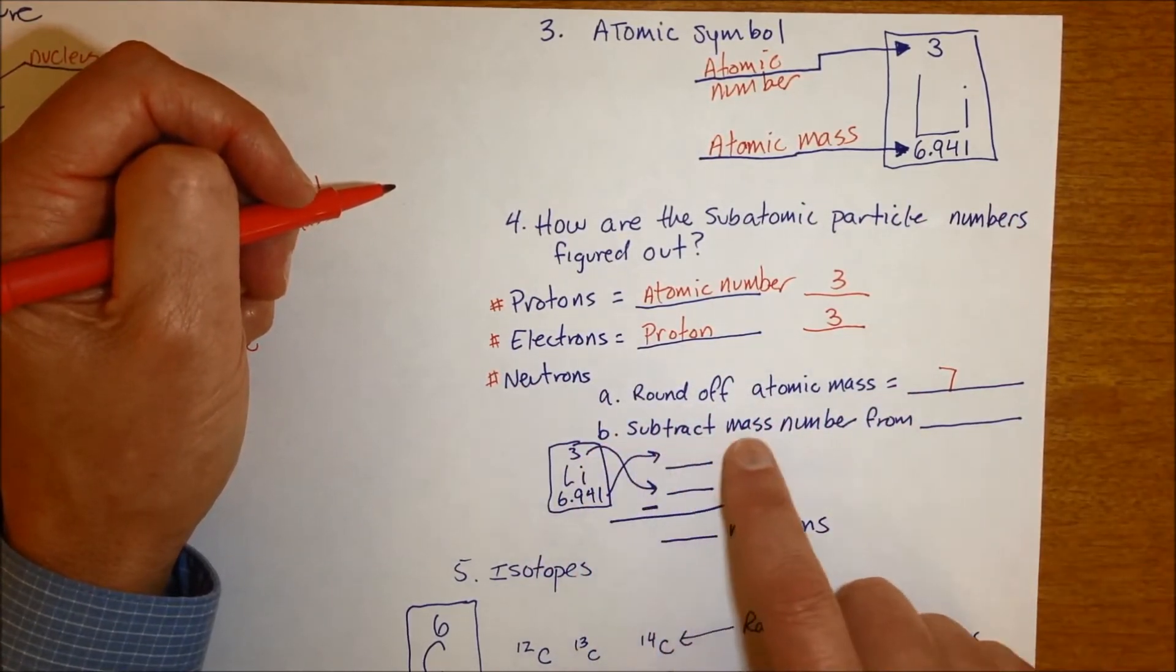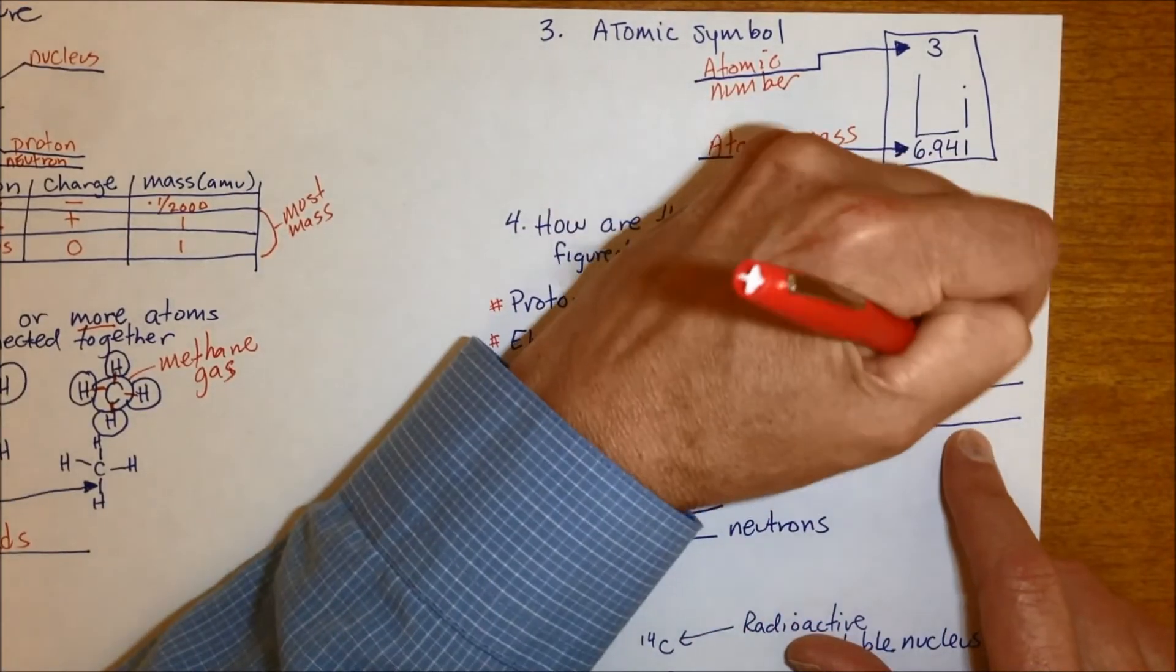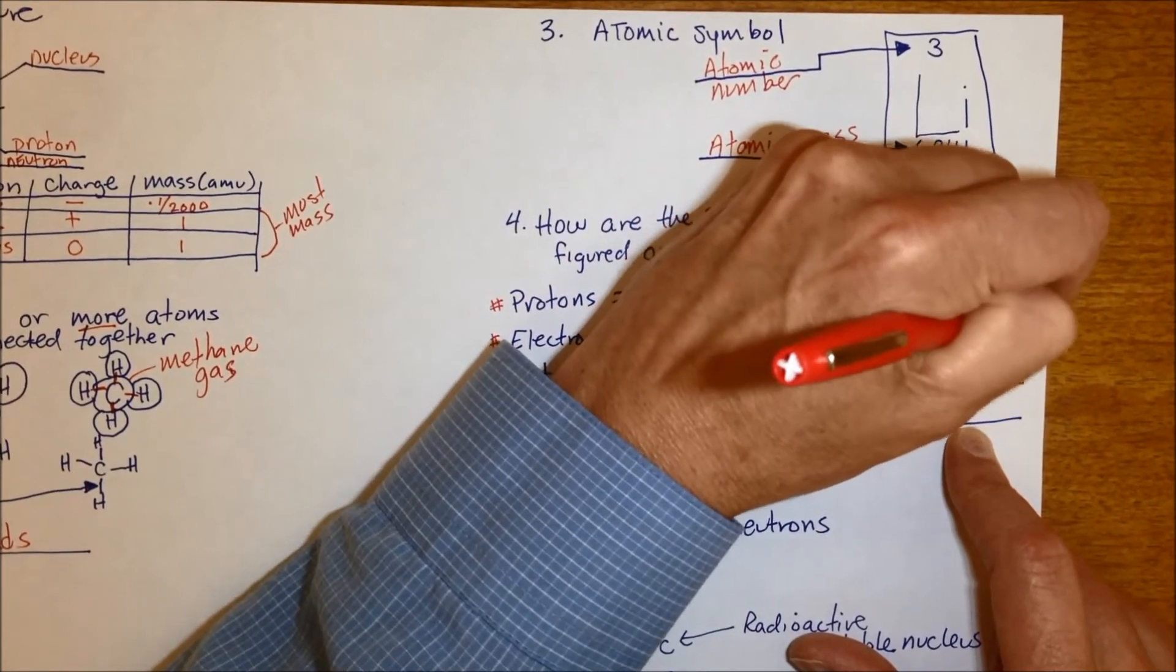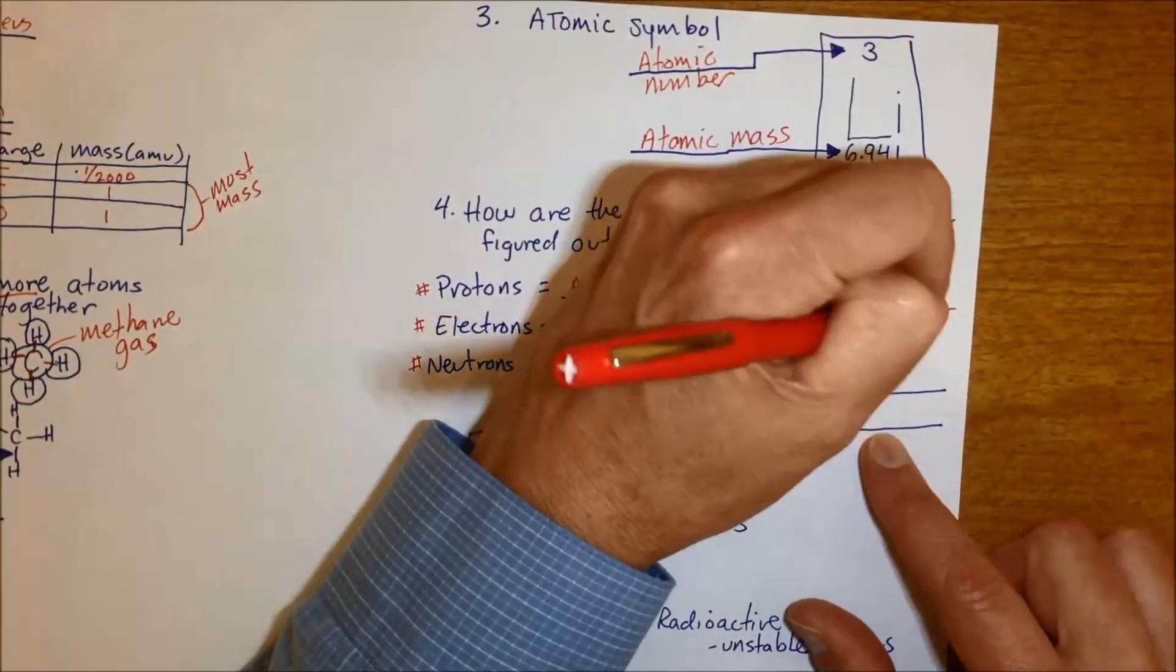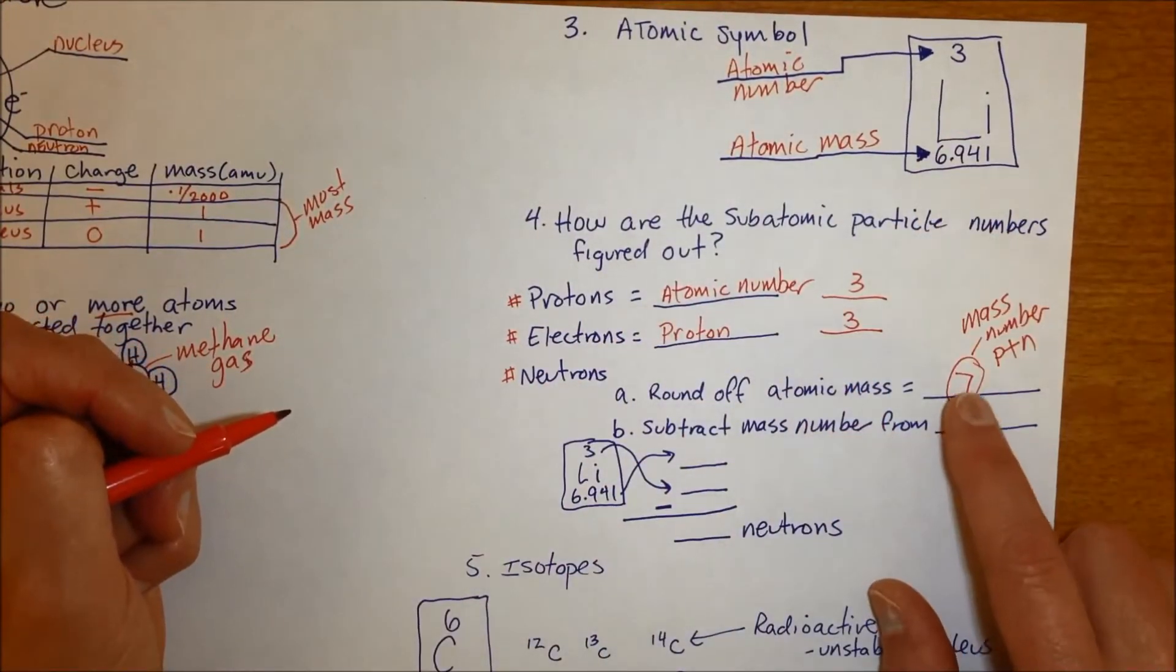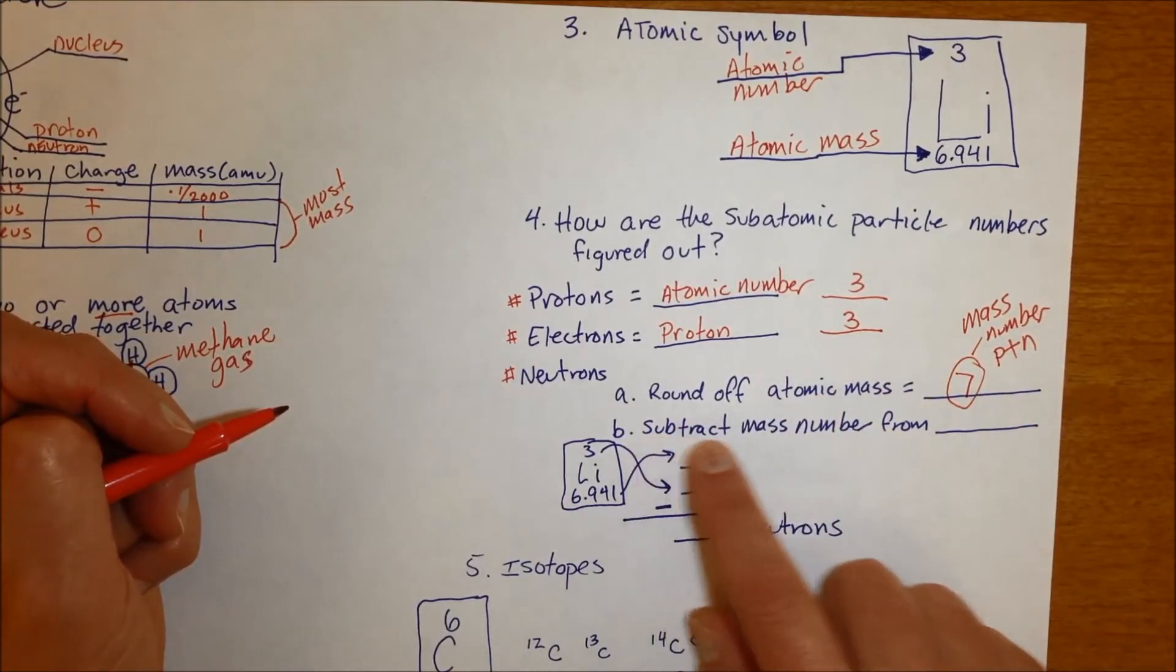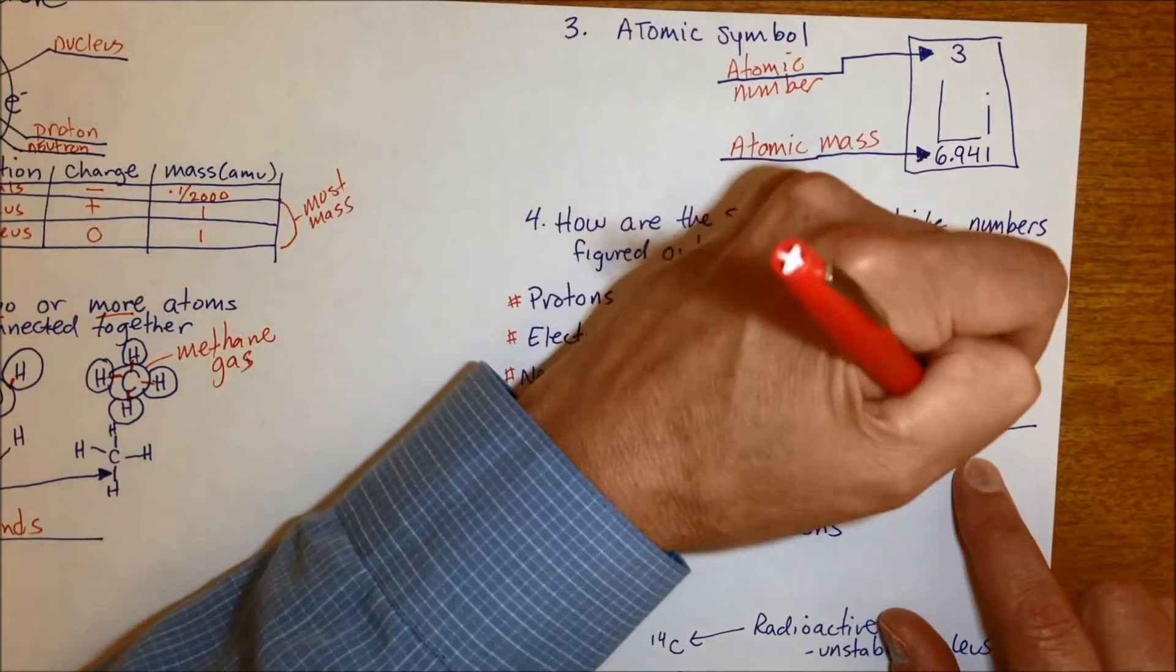The atomic mass is that decimal number in there, and you have to follow rounding rules. So if it's 0.5 or more, you round up. So in this case, that rounds to seven. That's not the number of neutrons, though. That's just rounding this off. That rounded off number actually has a name. It's called the mass number. It is together the number of protons and neutrons an atom actually has.